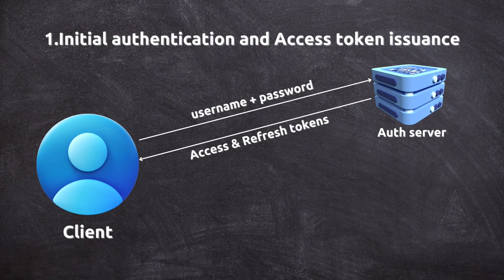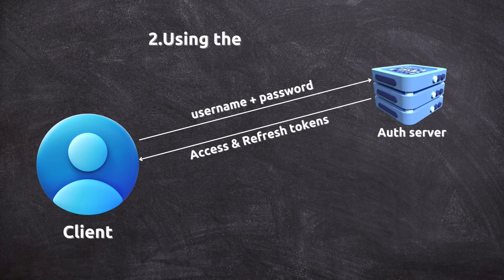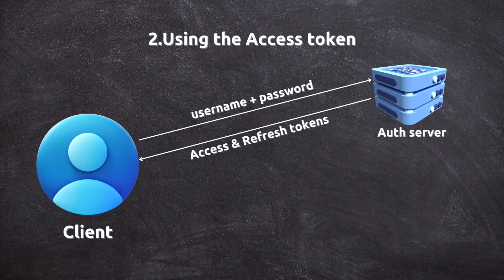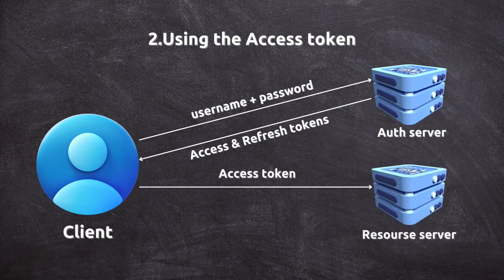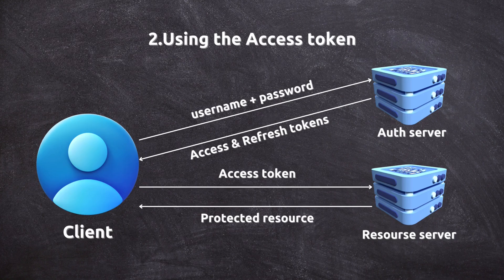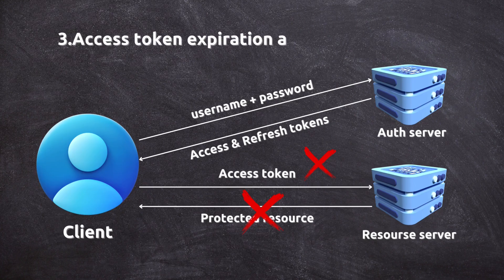Second, using the access token: the client — usually the front-end application — stores the access token and includes it in the headers of each request to access protected resources. The server checks the validity of the access token with each request. If it's valid, the request is processed. If the access token has expired, the request is denied and the client will need a new access token to continue.